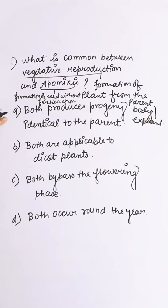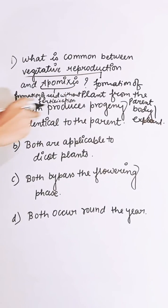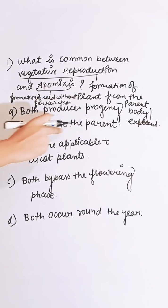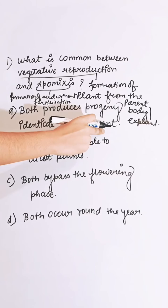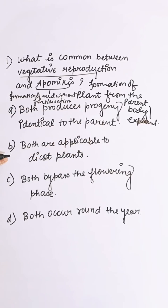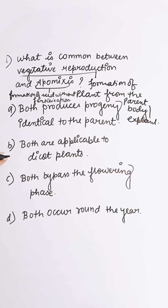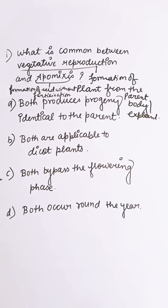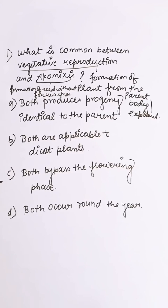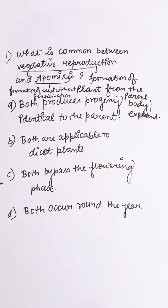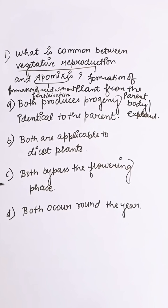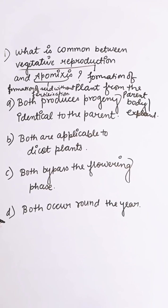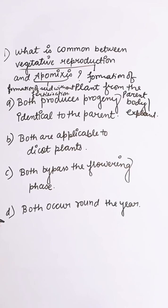First option: both produce progeny identical to the parent. Second: both are applicable to dicot plants. Third: both bypass the flowering phases. Fourth: both occur round the year.